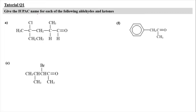For tutorial equation 1, we have to give the IUPAC name for each of the following aldehydes and ketones. For structure A, we have a carbonyl attached to a hydrogen, which means it is an aldehyde. The carbon attached to the aldehyde functional group is numbered as carbon 1. We take the longest carbon chain: 1, 2, 3, 4, 5, and 6 — so we name it hexanal. 'Al' refers to aldehyde, giving us hexanal.